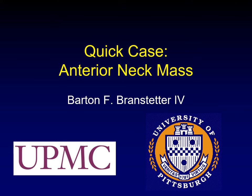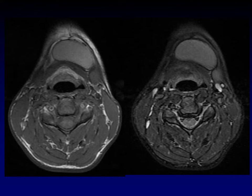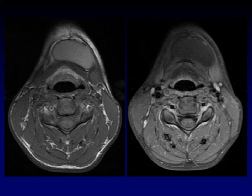It's a classic presentation: a child with a midline anterior neck mass. Here are T1 and T2 weighted sequences in the anterior neck. The mass is pretty easy to pick up here. Here is a post-contrast image. It's time to make a decision — what do you think this is?